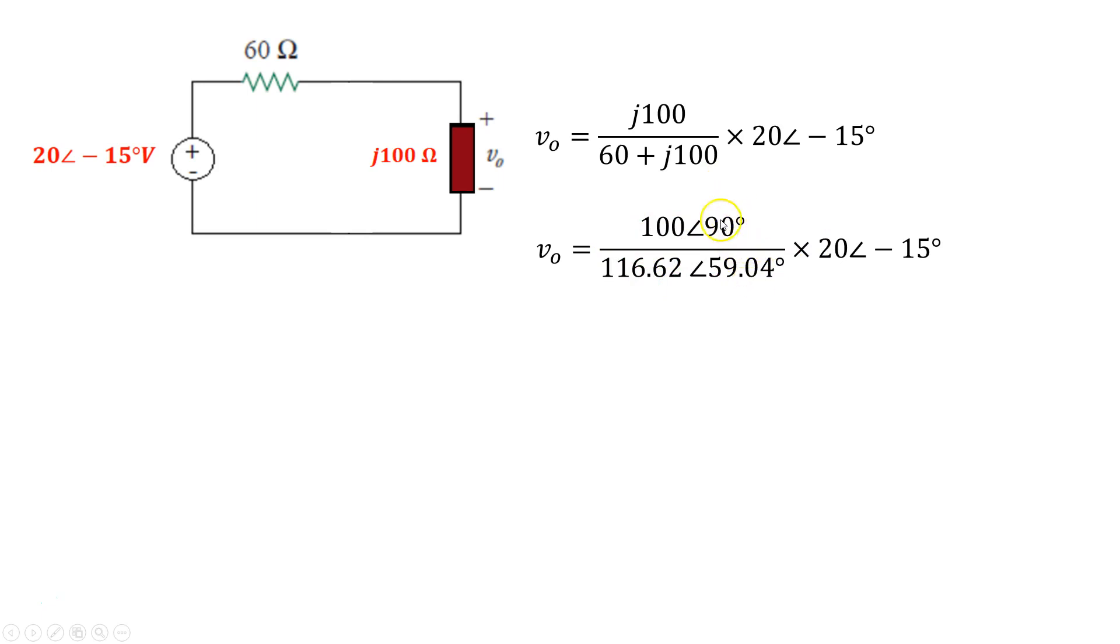And the angle is basically when complex numbers divide each other, I get 90 minus 59.04 and that is multiplied with this complex number. So this resulting angle gets added to whatever angle this is because we are multiplying it. So overall, I get 100 times 20 divided by 116.62.